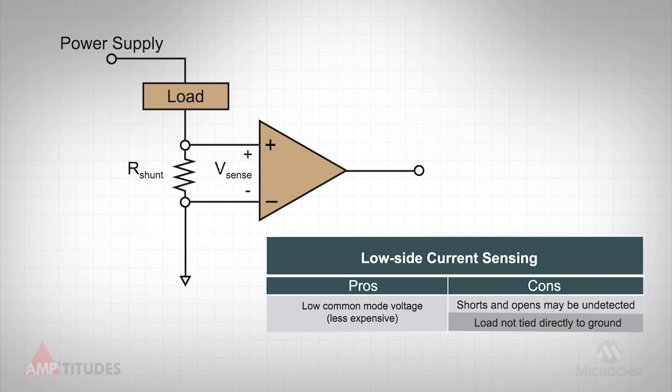As opposed to high-side current sensing, on the low side, the common mode is referenced to ground. Hence, a cheaper, more readily available low-voltage amplifier can be used.